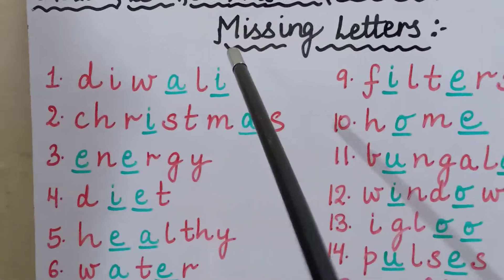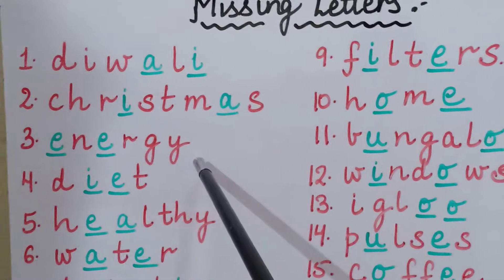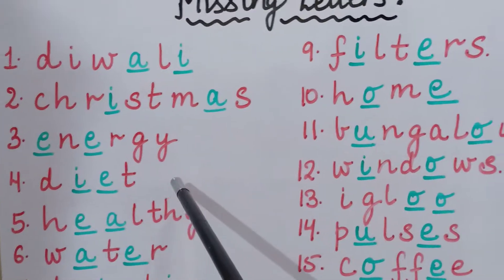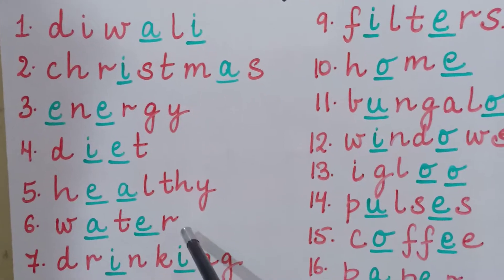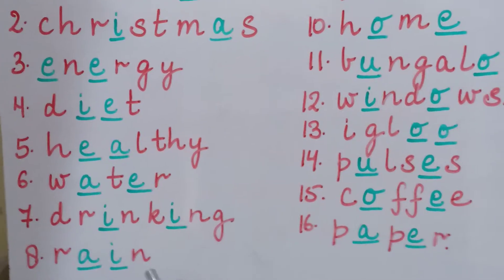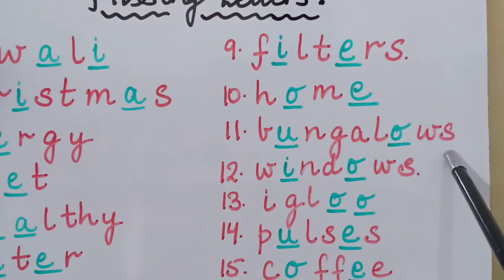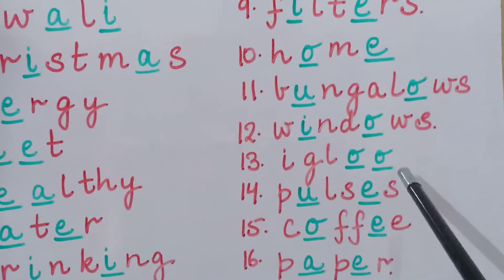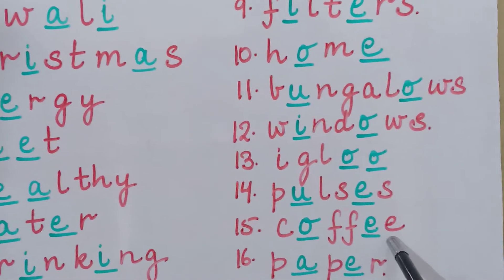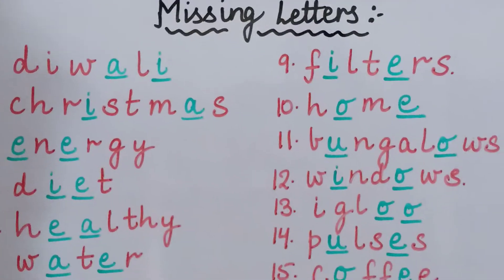Once again repeating all sixteen words: Diwali, Christmas, Energy, Diet, Healthy, Water, Drinking, Rain, Filters, Home, Bungalows, Windows, Igloo, Pulses, Coffee, and Paper. I hope you all have understood all these sixteen missing letters.